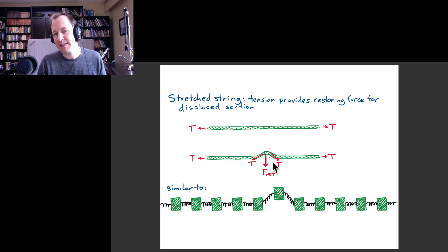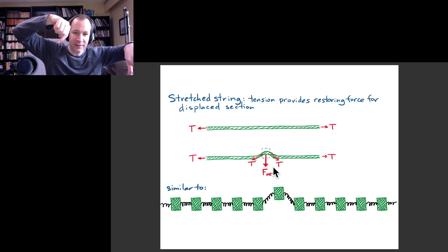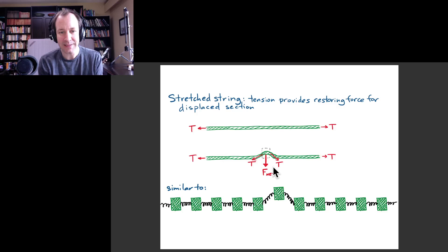That's coming from the tension forces acting on the left and on the right. Because the string is bent, those are no longer canceling each other. There's a down and left force and there's a down and right force, so the horizontal force ends up canceling, but the vertical force adds up and you get a net downward force.